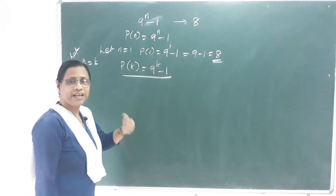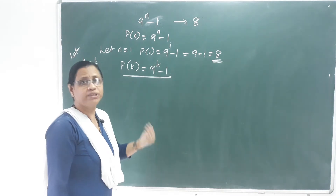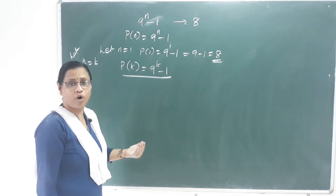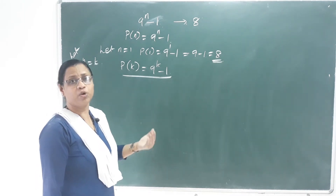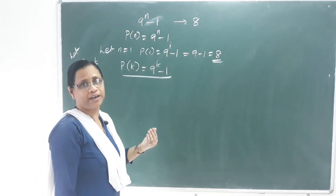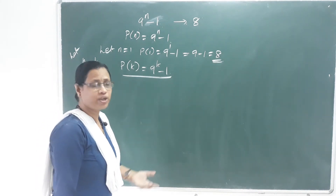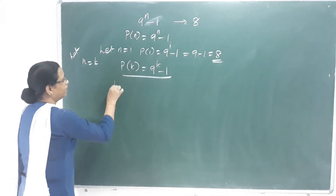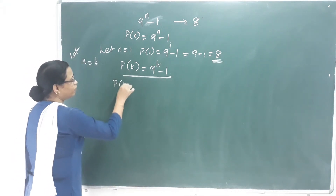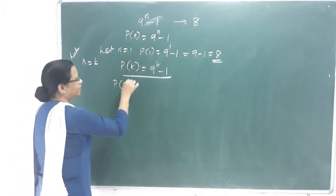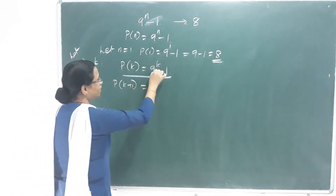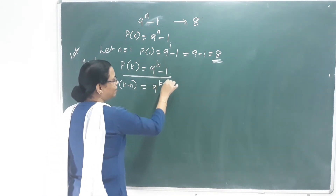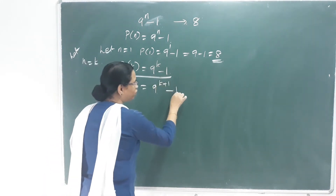We shall prove that P of N is true for N equal to K plus 1. Substituting N equal to K plus 1, then P of K plus 1 equals 9 raised to K plus 1 minus 1.